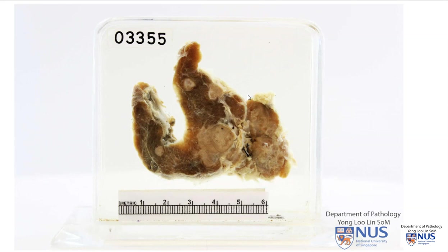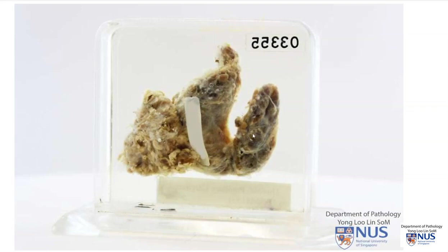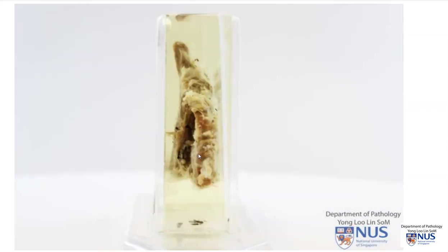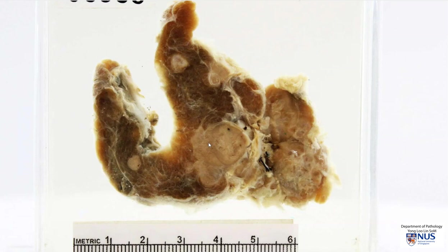This is a gross pathology specimen of a coronally sectioned thyroid gland, and we're looking here at the cut surface. This is the capsular or outer surface of the thyroid gland. These brownish areas represent normal thyroid parenchyma, and we can see that there are several pale, rounded to irregular masses dotted throughout the thyroid parenchyma. This is an example of a multifocal tumor.